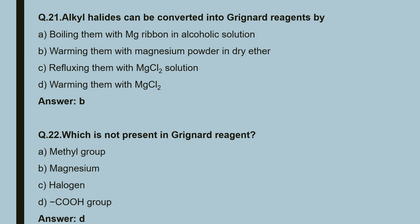Question 22: which is not present in Grignard reagent? A. methyl group — present; B. magnesium — present; C. halogen — present; D. carboxyl group. Carboxyl group is not present in Grignard reagent. So the correct answer is D.